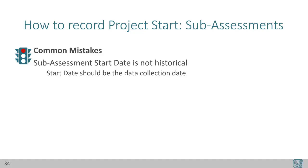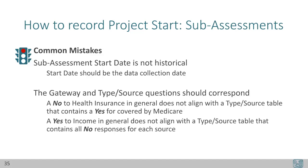Common mistakes to avoid: sub-assessment start date is not historical. The start date should be the data collection date — for example, start date is not the client's original diagnosis date or job history. The gateway and type or source questions should also correspond. A no to health insurance in general does not align with a type or source table that contains a yes for covered by Medicare. Similarly, a yes to income in general does not align with a type or source table that contains all no responses for each source. Mismatching the gateway and the type or source is a common typo, but we need consistent responses entered into HMIS to understand a client's resources and obstacles.